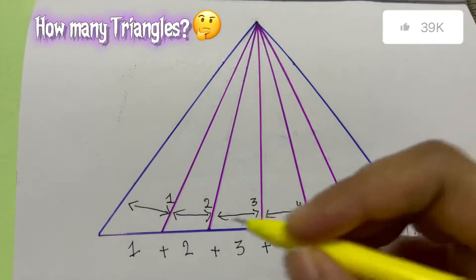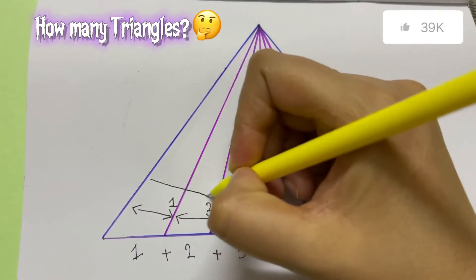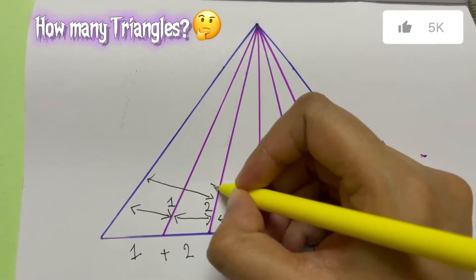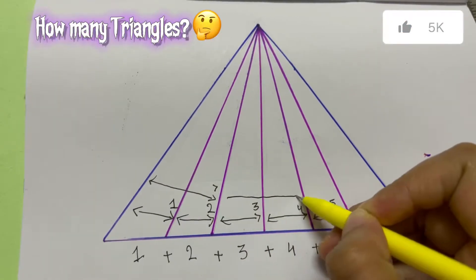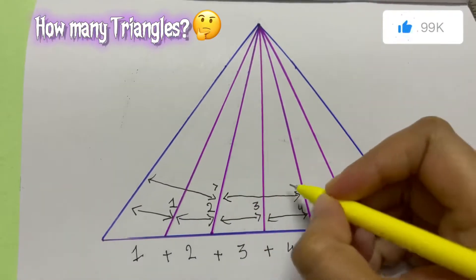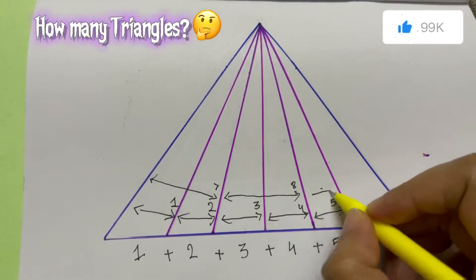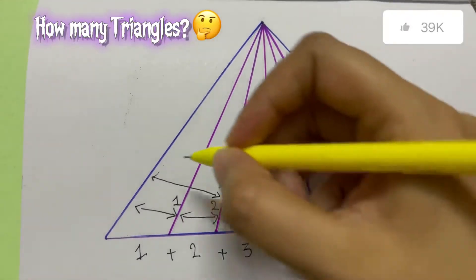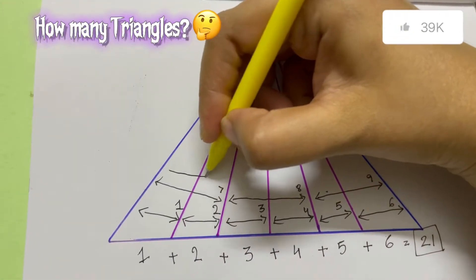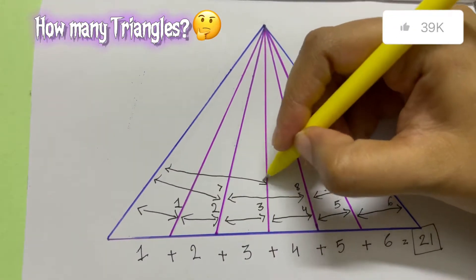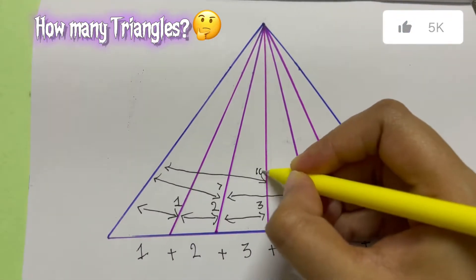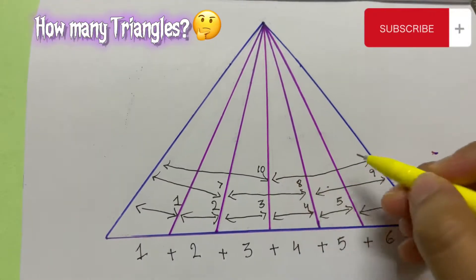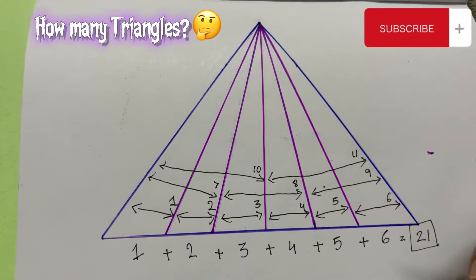And then, I am just going to take two of them together. It will be the seventh triangle. Then, this is my eighth triangle. And that is my tenth triangle. And these three of them together makes my eleventh triangle.